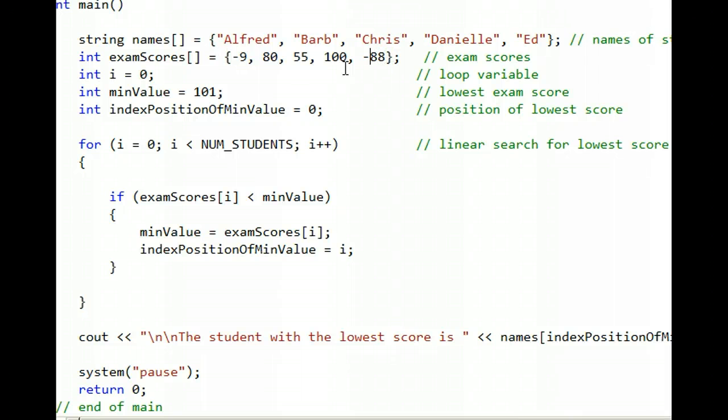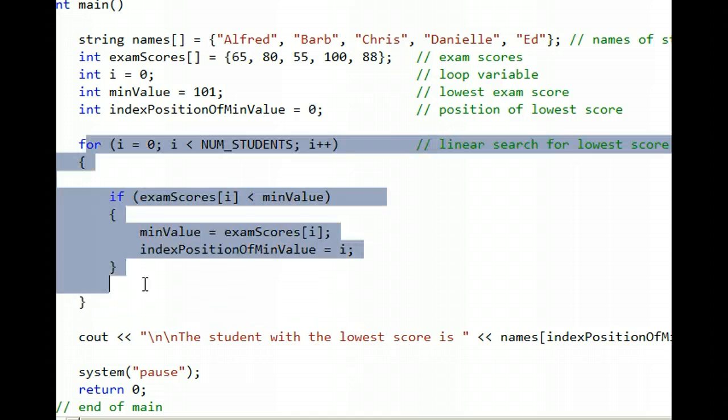Let's put these back to reasonable numbers and not negatives. And let's trace the code real quickly to make sure that you understand why it's working the way it's working. The variable i starts at 0. Min value, check this out. Instead of starting that variable at 0 like we usually do, we start at a really high number, a number that's higher than any possible allowable test score. And we start indexPositionOfMinValue at 0.